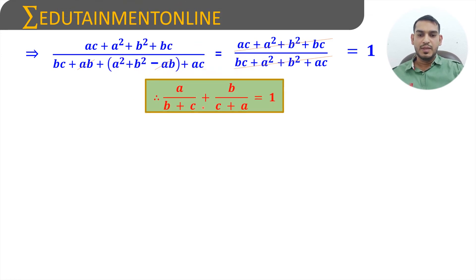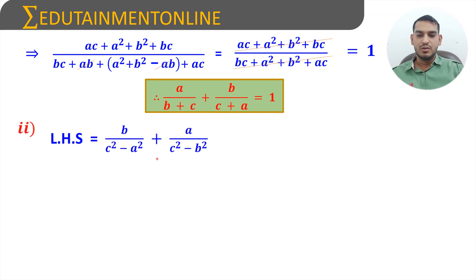Therefore, a/(b+c) + b/(c+a) = 1. Now for the second part: b/(c²-a²) + a/(c²-b²) = 0.